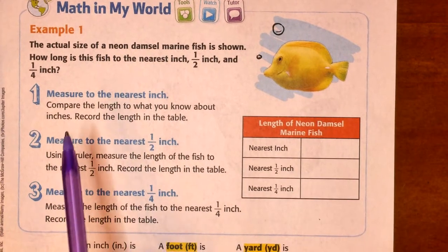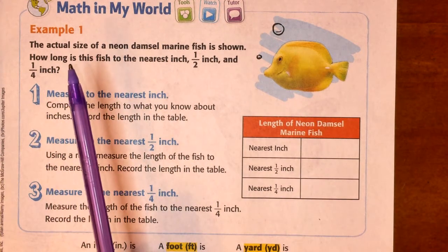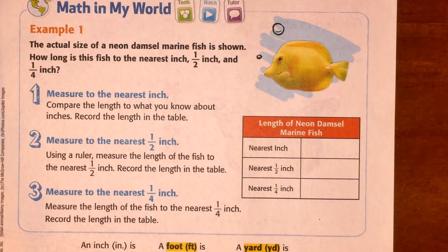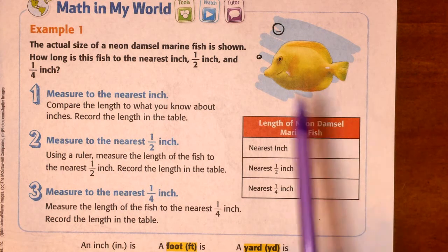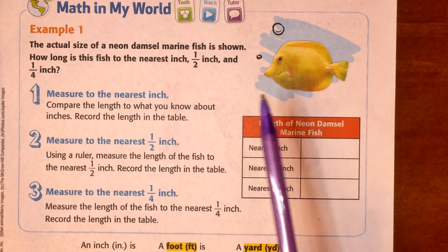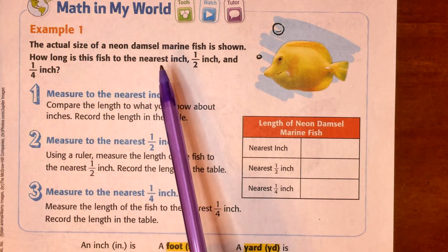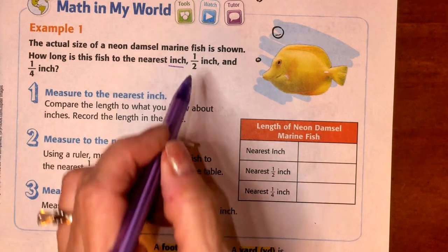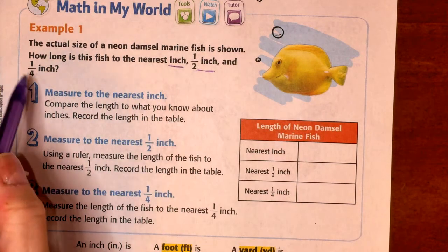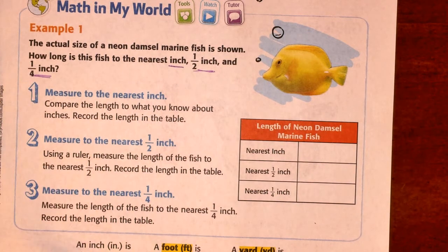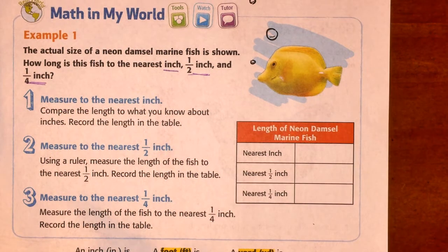Let's look at our first example. Example one says the actual size of a neon damsel marine fish is shown. There it is right there. So, we have to measure how long is this fish to the nearest inch, the nearest half inch, and the nearest quarter. The units of measure that I just showed you.